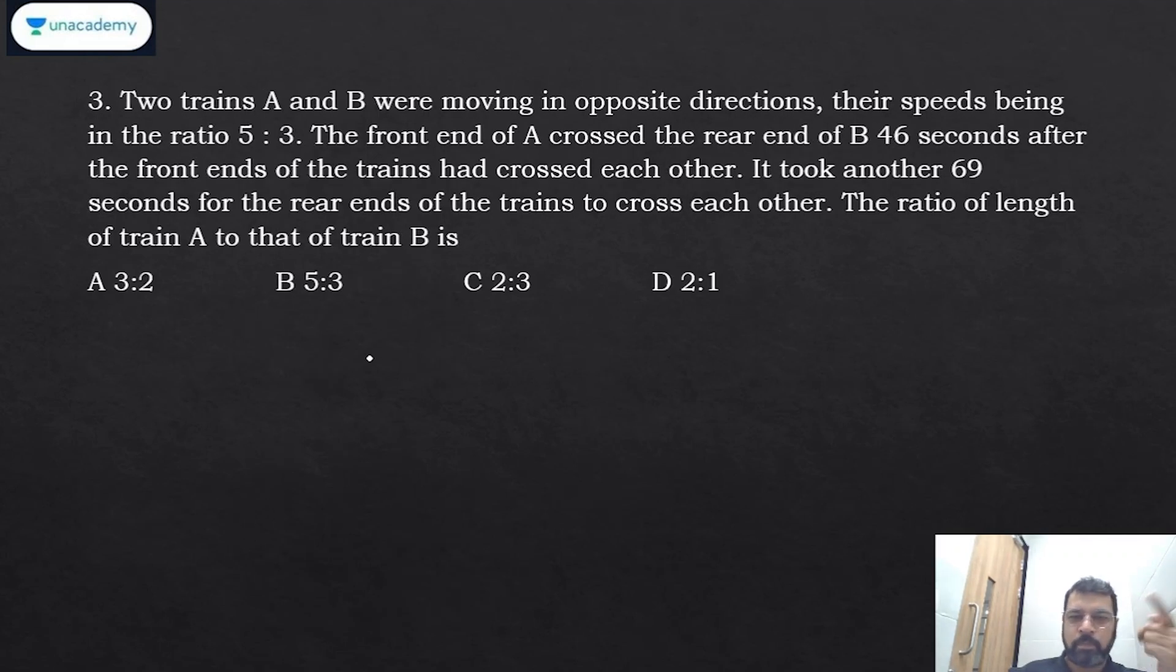Two trains A and B are moving in opposite directions. The basic idea is that you need to pause the video and solve it, and then see the equation and solution. Now two trains A and B are moving in opposite directions. Their speeds are in the ratio 5:3. The front end of A crosses the rear end of B.